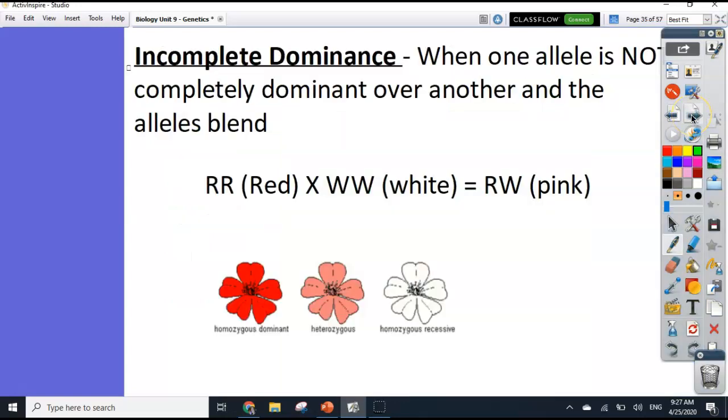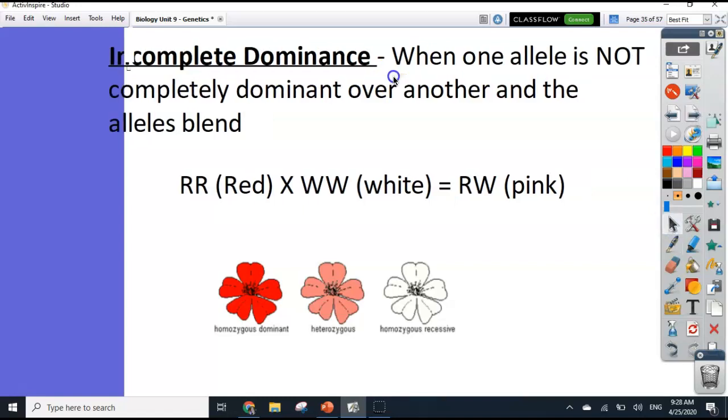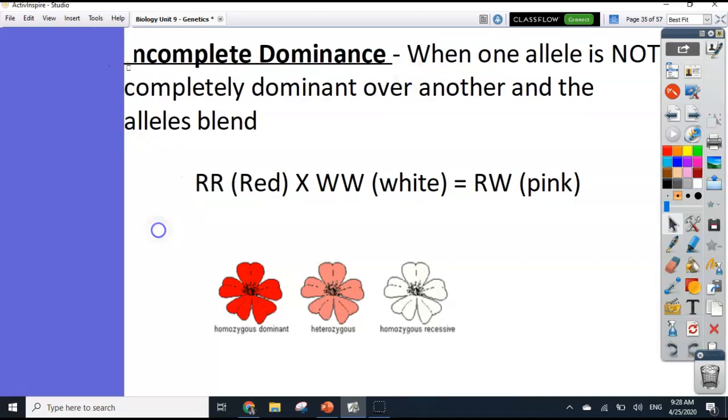This is something called incomplete dominance. This is when one gene is not completely dominant over another gene. So as a result, the genes blend together. We get something that's in between both of those genes.